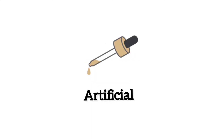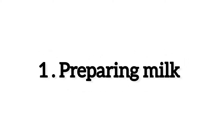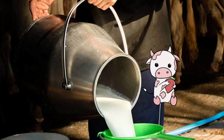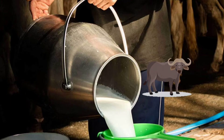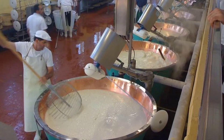Cheese production has several steps. The first one is preparing milk — we obtain milk from cows, goats, and buffalo. After that, we need to acidify the milk using several processes.